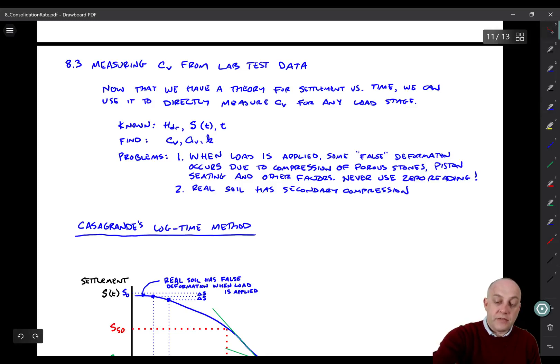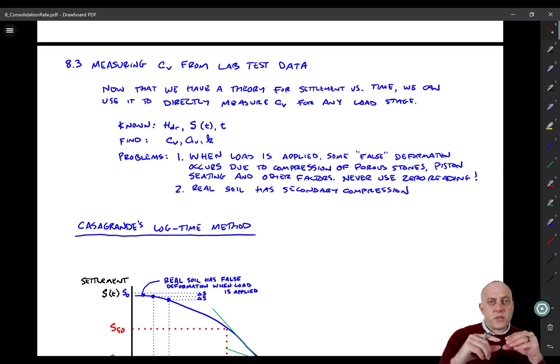Let's talk about some of the problems that we have. First, when a load is applied, some false deformation happens. What I mean by false deformation is that the dial gauge moves, but it's not because the soil moved, it's because other things move. The worst form of false deformation is when the piston isn't quite seated properly into the top cap and you apply the load and the piston might settle. Your dial gauge picks up that settlement as being a deformation that is actually not attributed to the soil.